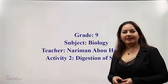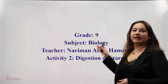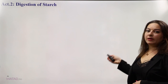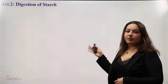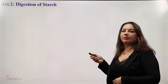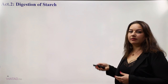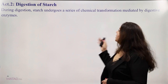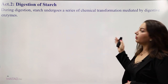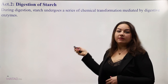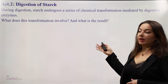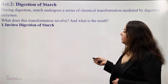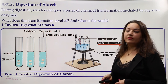Good morning, Grade 9. Today we are going to talk about Activity 2, which is digestion of starch. We will use the backward design method, using the experiment to make a final conclusion that will be written in your copy books. During digestion, starch undergoes a series of molecular simplification or chemical transformation mediated by digestive enzymes. We will see the result in this experiment.